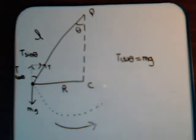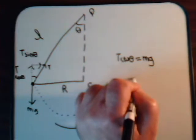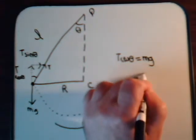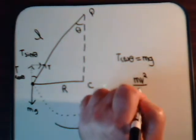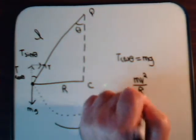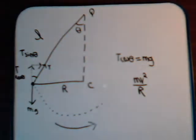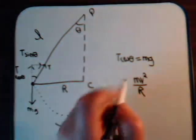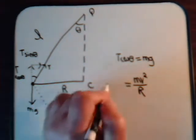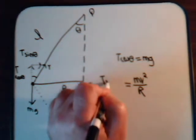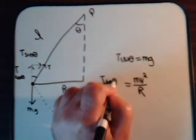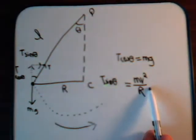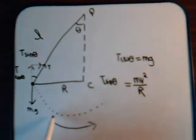There is only one resultant force on our mass, and that's T times the sine of theta, pointing towards the center of the circle. For circular motion, there must be a centripetal force of magnitude mv squared over r, and that centripetal force comes from T times the sine of theta. So T times sine of theta must equal mv squared over r in magnitude to make this circular motion possible.